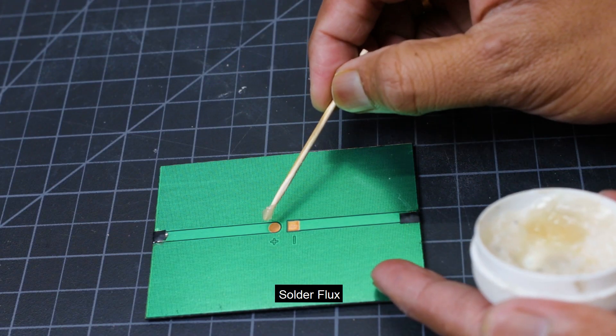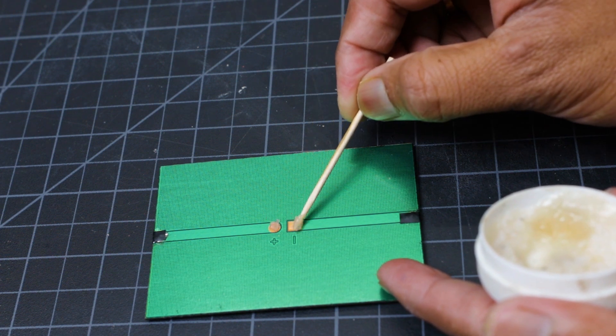Before soldering terminal wire to the solar panel, I used some flux, then solder the wire to the solar panel.